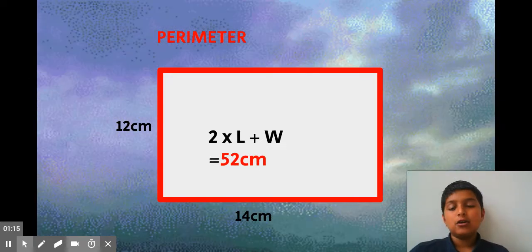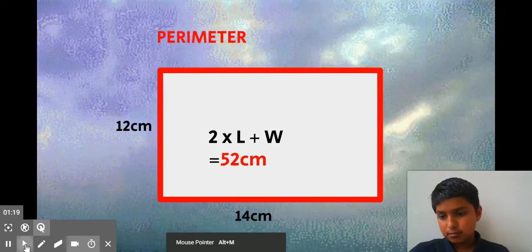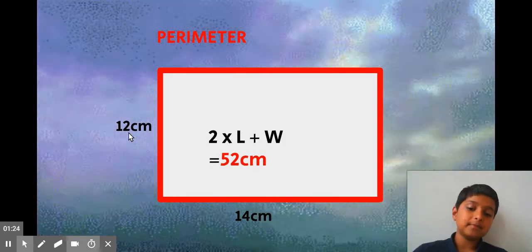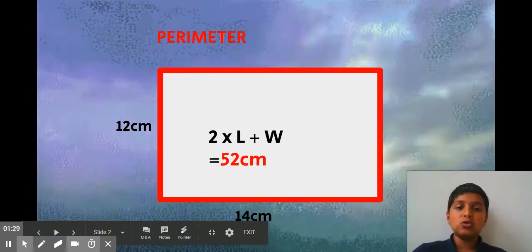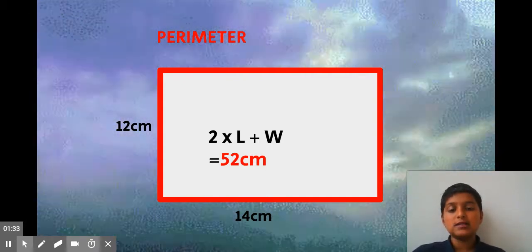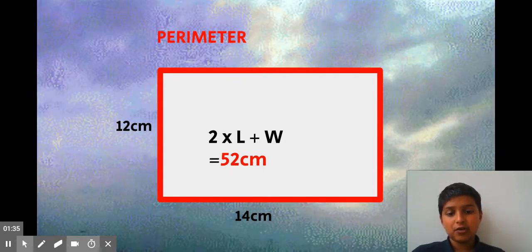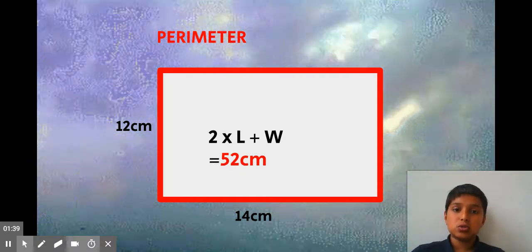is you're going to take 12 and add 14 to it. So we're going to do 12 plus 14, which equals 26. Now with 26, what we're going to do is multiply by